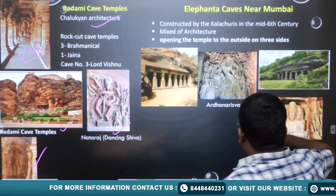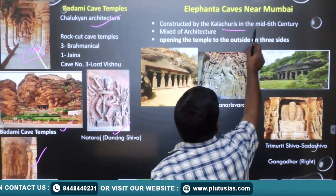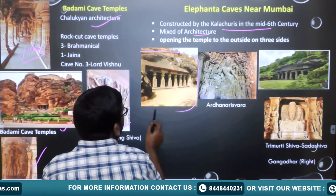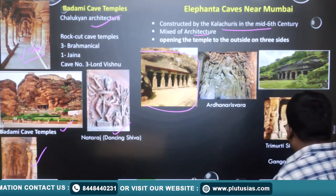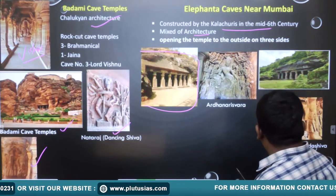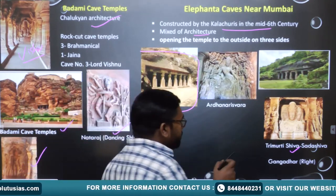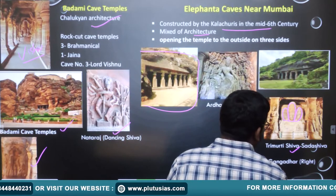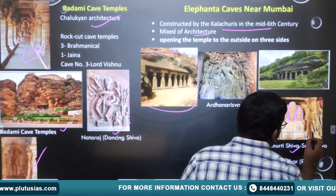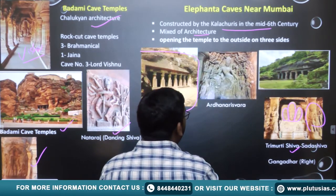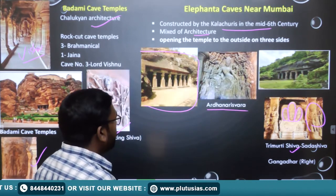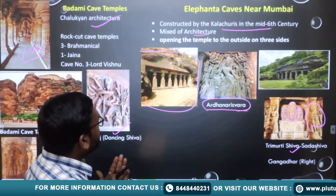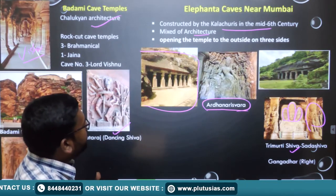Elephanta caves near Mumbai were constructed by the Kalachuris in the mid-6th century. The temple opens on three sides. The most notable find in the Elephanta caves is the Trimurti Shiva — Sadashiva — with three heads. To the right of Sadashiva is the image of Nataraja. Also found is Ardhanarishvara — half Parvati, half Shiva — a very important sculpture found in the Elephanta caves.